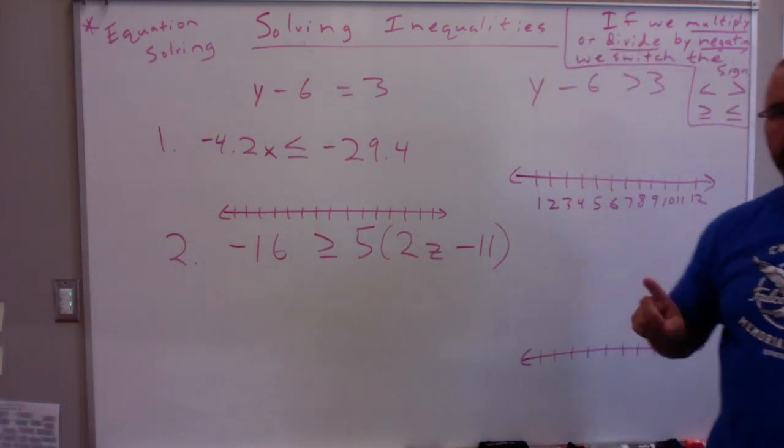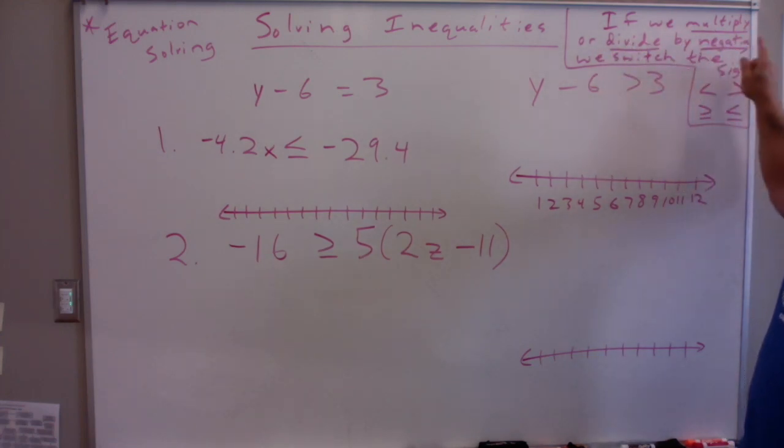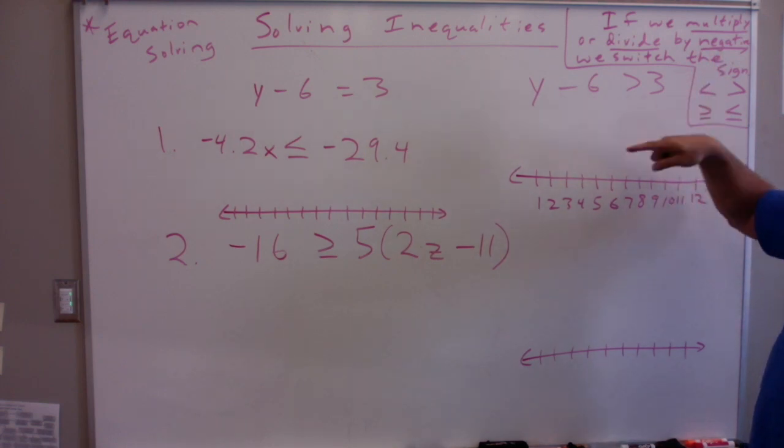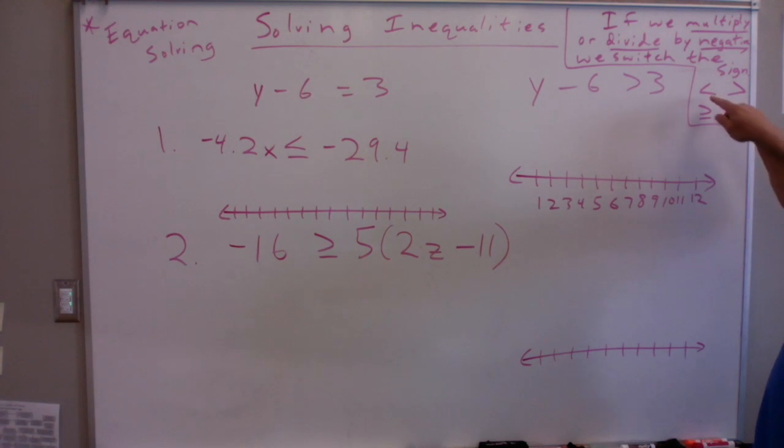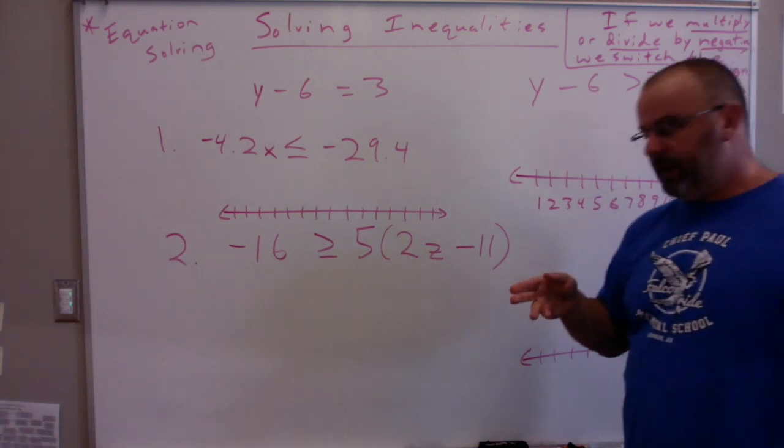There is one rule that I want you to take note of. If we multiply or divide by a negative number on both sides of the inequality, we switch the sign. So we'd switch it from less than to greater than, or from greater than to less than, or greater than or equal to, or less than or equal to. So we'd switch the sign if we multiply or divide by a negative number.